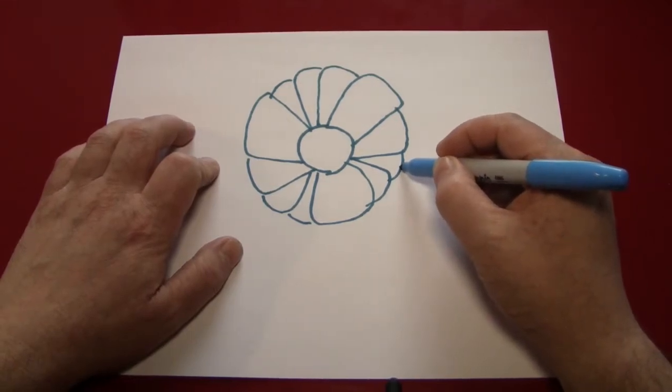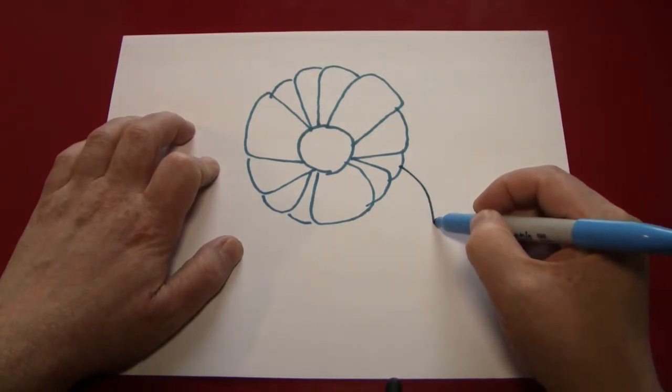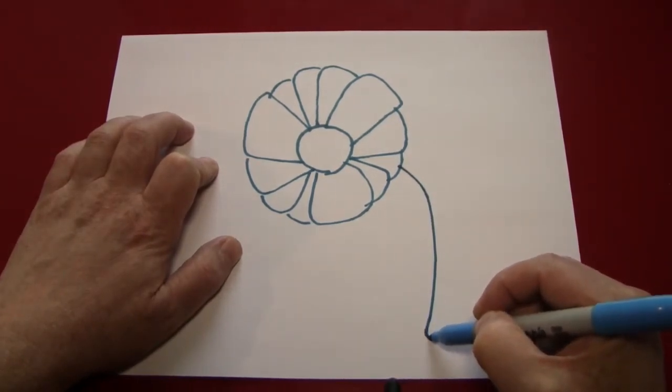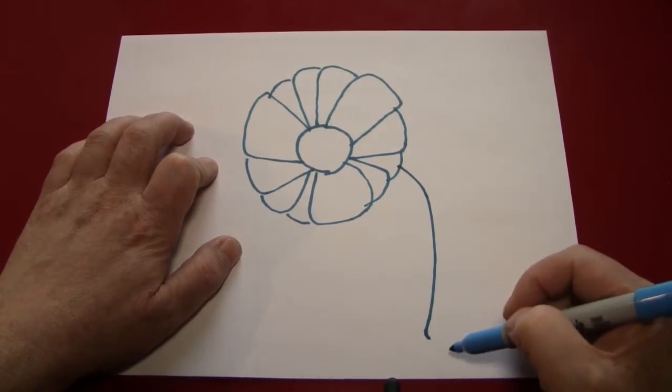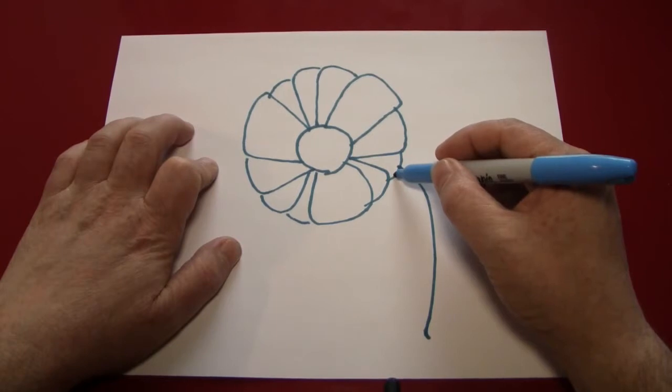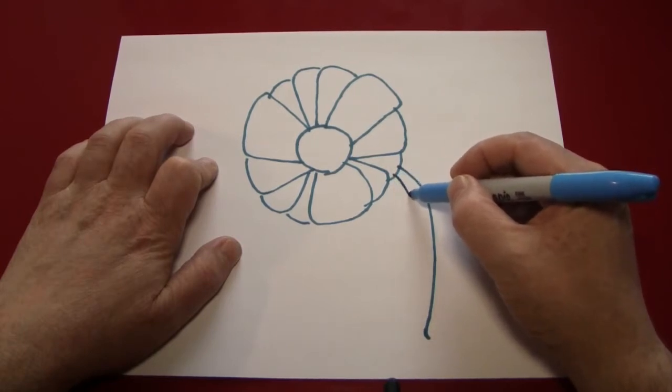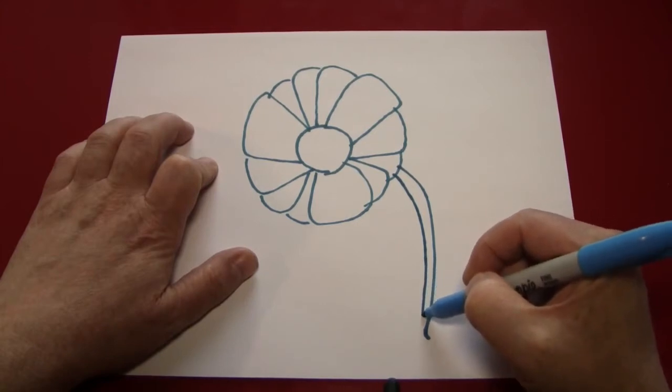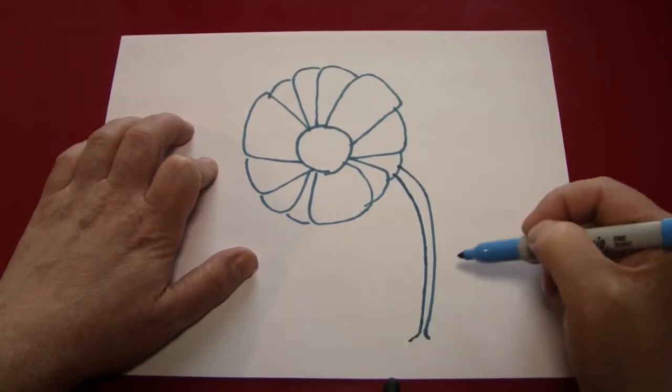And we'll pick a point. We'll just make a kind of generally up and down curved line like that, that bends to the right. Then we'll move a little bit to the left of that line and follow it down pretty much as best as we can without making it too uneven. And have it bend to the left.